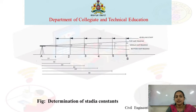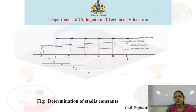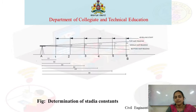Pegs 1, 2, 3, 4, 5, and 6 are placed at equal distances — each peg is at 20 meter intervals. The readings taken are the top hair reading, middle reading, and bottom hair reading.